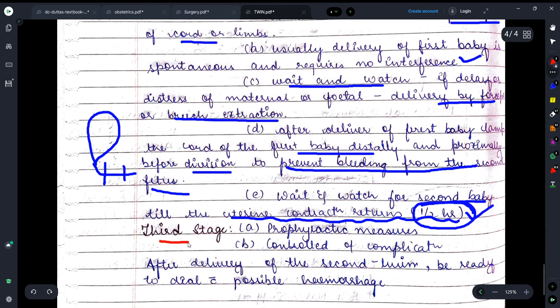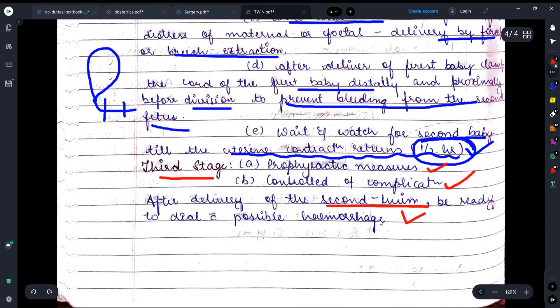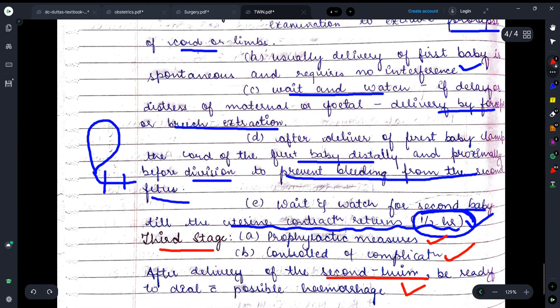Moving on, talking about the third stage, we have to take some prophylactic measures so that complications don't occur. After the delivery of the second twin, be ready to deal with possible hemorrhage. Sometimes the female may have hemorrhage-like condition after the second twin's delivery, so we have to keep this in mind.